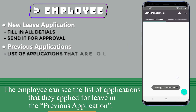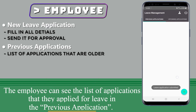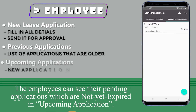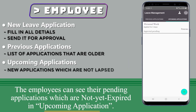The employee can see the list of applications they have applied for in the previous application section. The employee can also see their pending applications which are not yet expired in the upcoming application section.